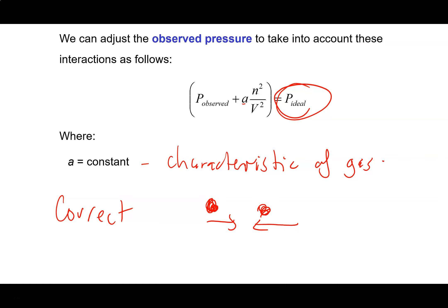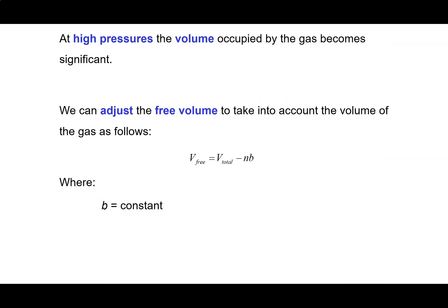Now we need to correct for non-ideal volume—the fact that gas molecules do take up space in the container. At high pressures, the volume occupied by gas becomes significant. We can adjust the free volume, the total volume of the container, to account for the volume of the gas.